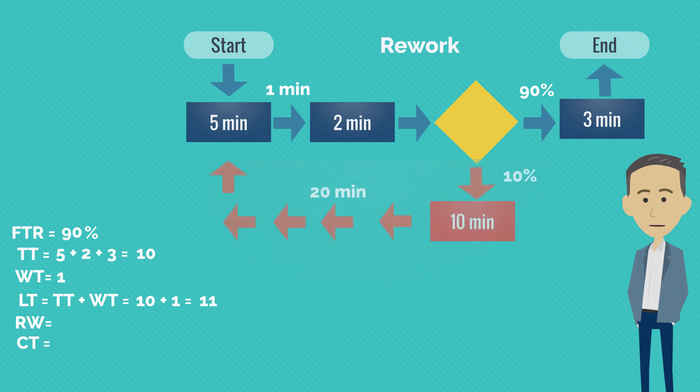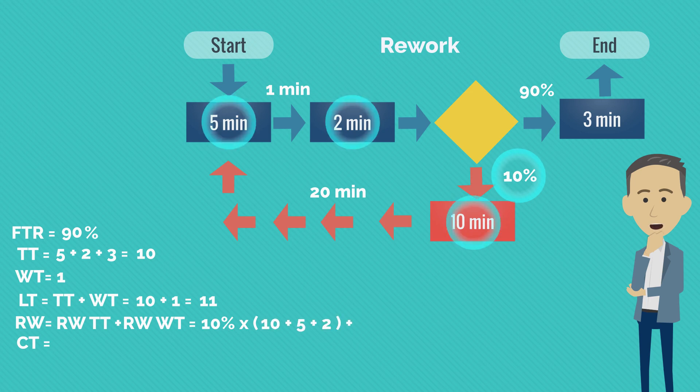To calculate it we need to sum rework touch time and rework waiting time. As you can see, only 10% of the volumes go down this path. So rework touch time is 10% multiplied with all the steps that need to be performed to fix the error: 10 plus 5 plus 2.